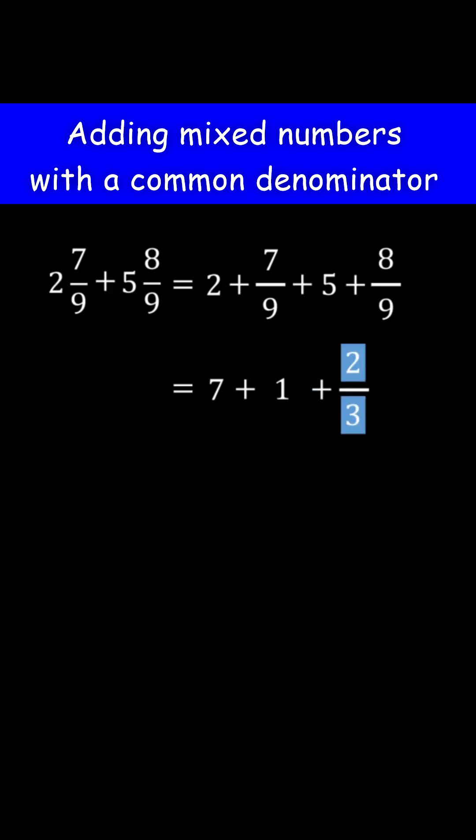3 over 3 is equal to 1. As you can see now the fraction part is a proper fraction. Okay now add 7 and 1. 7 plus 1 is 8. Now you can write 8 plus 2 over 3 as a mixed number 8 and 2 over 3. Therefore this is the answer.